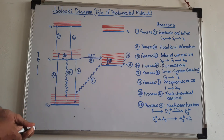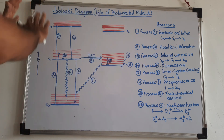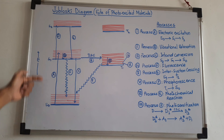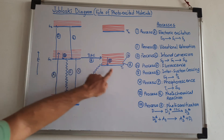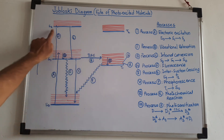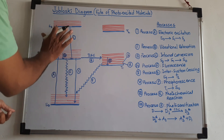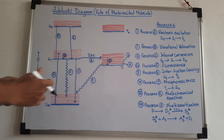Today we are discussing the Jablonski diagram. Here we will see what happens when a molecule is photo-excited. Before we start, you should know certain terms. You can see here S0, S1, and S2 — these are all singlet electronic excited states. For excited state S1, there is a complementary T1, meaning triplet excited state. For S2, there is T2. So for every excited singlet state, there is an excited triplet state.